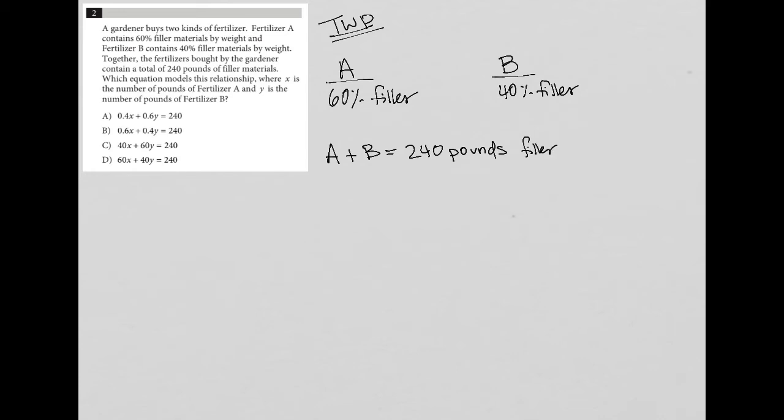which equation models this relationship where X is the number of pounds of fertilizer A? So X is the number of pounds of fertilizer A. We have X here. And Y is the number of pounds of fertilizer B. So I have a Y here.